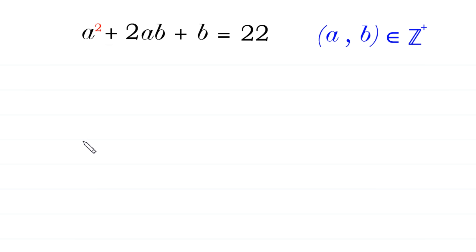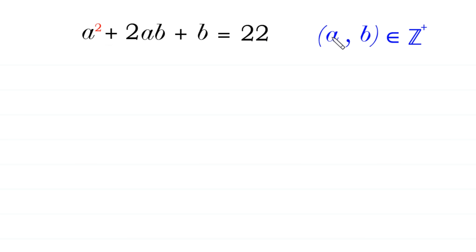Hello, welcome to how to solve this Diophantine equation: a squared plus 2ab plus b is equal to 22, and we need to find all possible values of a and b, where a and b are positive integers.